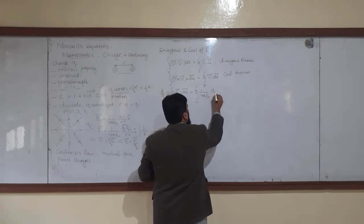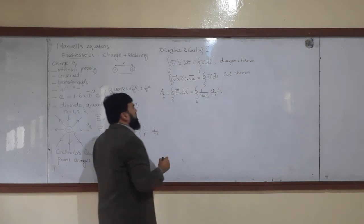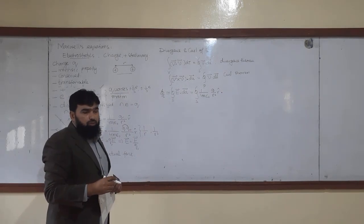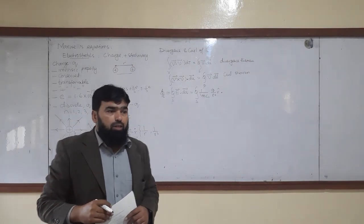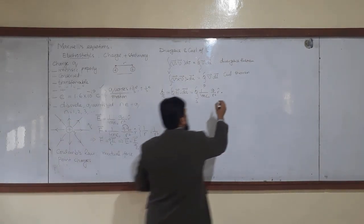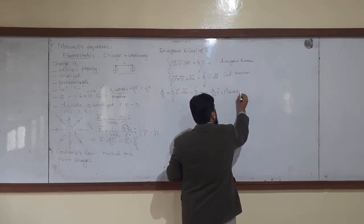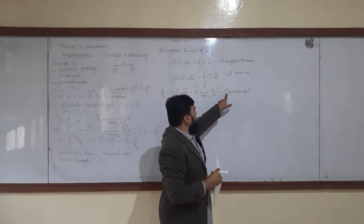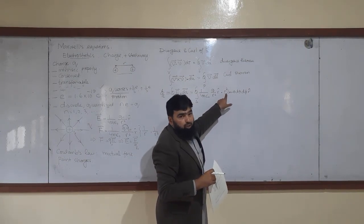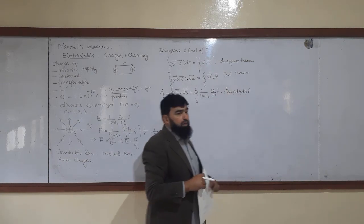Writing it out: this is a closed surface integral and E is (1 over 4π ε₀) times Q over R² in the R-hat direction, dotted with dA. The area element dA in spherical coordinates is R² sin θ dθ dφ in the R-hat direction.